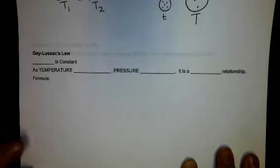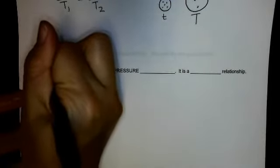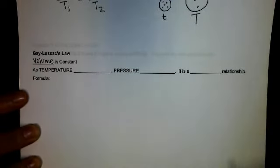Gay-Lussac's law is our third basic law. Here, our volume is constant. So our container is rigid. We can't change it.